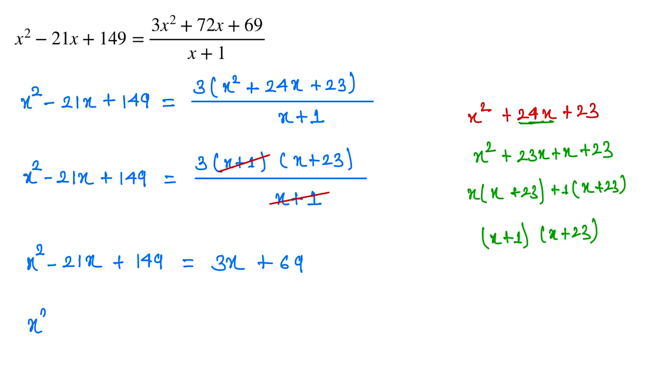Now we transfer this to the left-hand side, so this becomes -3x - 69 equals 0.